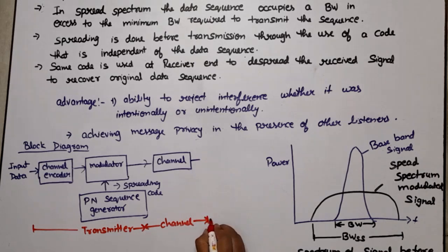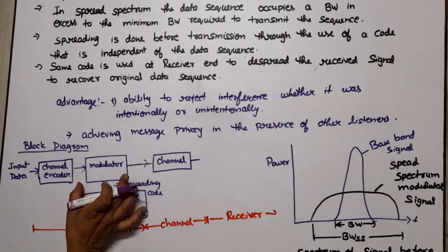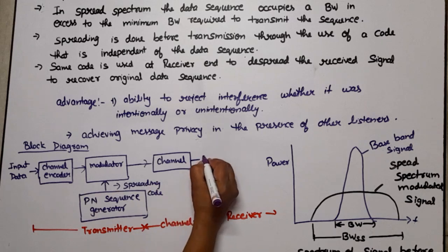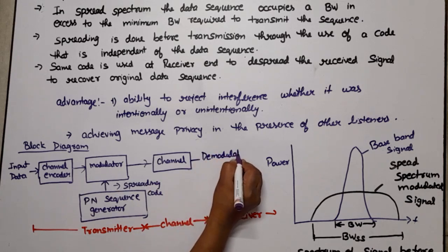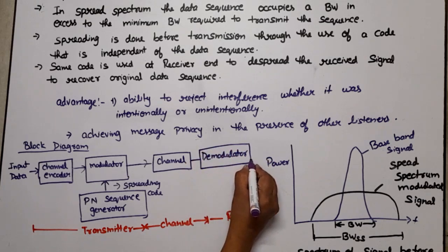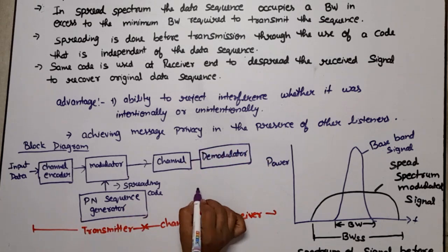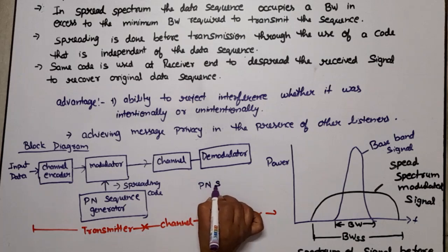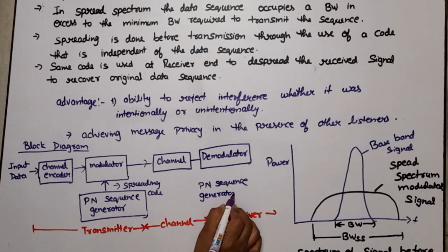Now after transmitter, this portion is channel, it goes through medium where your data is transmitted. Now we have our receiver portion. Just like we used modulator, its opposite process means we use demodulator here. Demodulator will also use same sequence, PN sequence generator. Please remember that both should be synchronized.